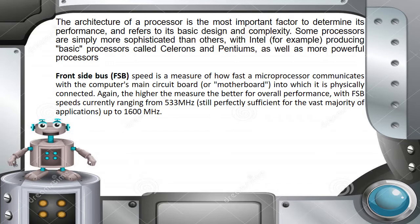The architecture of a processor is the most important factor in determining its performance and refers to its basic design and complexity. Some processors are simply more sophisticated than others, with Intel producing basic processors called Celerons and Pentiums, as well as more powerful processors. The front-side bus speed is a measure of how fast a microprocessor communicates with the computer's motherboard. The higher the better, with FSB speed currently ranging from 533 MHz, which is still sufficient for most applications, up to 1,600 MHz.